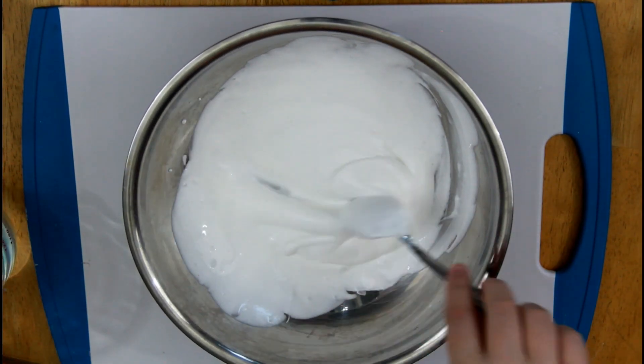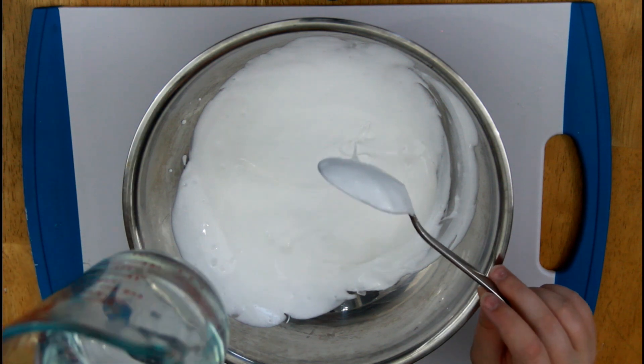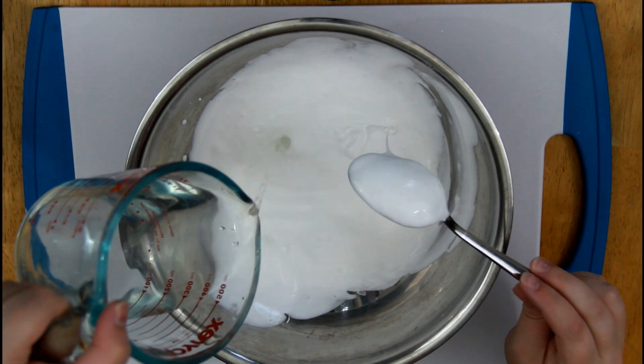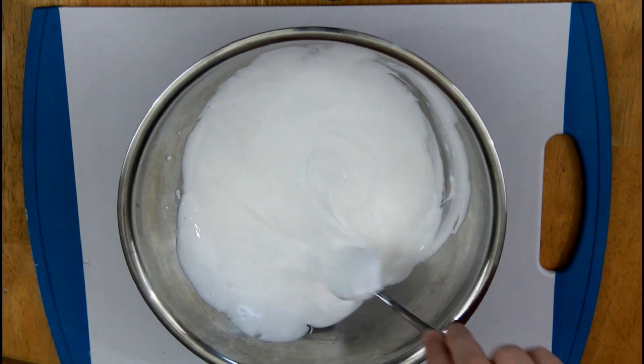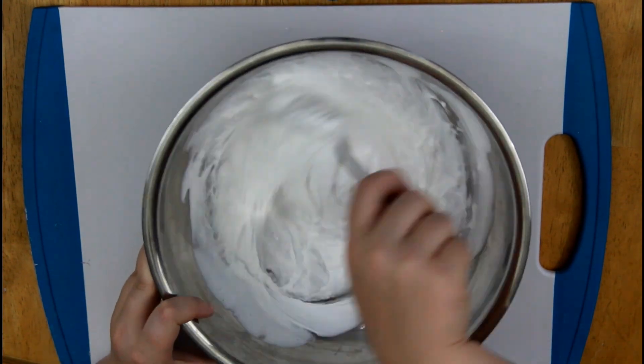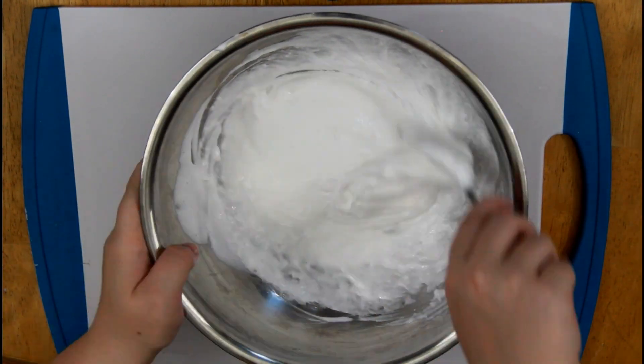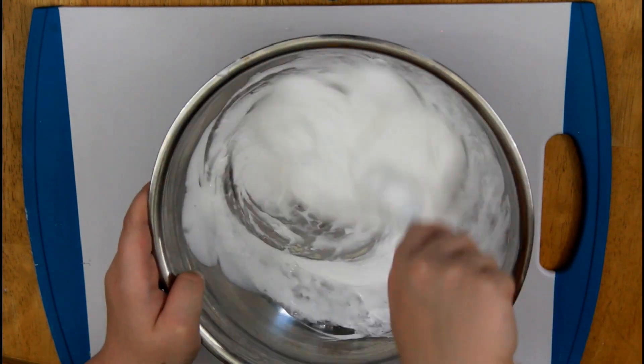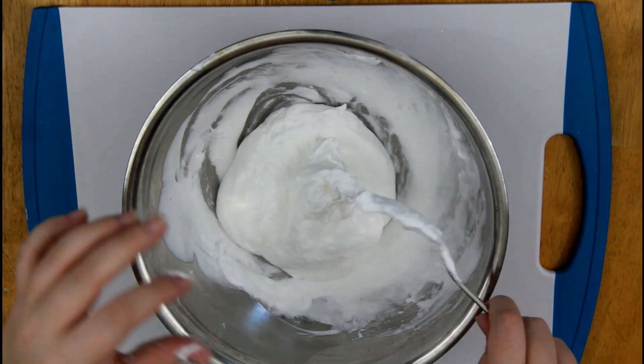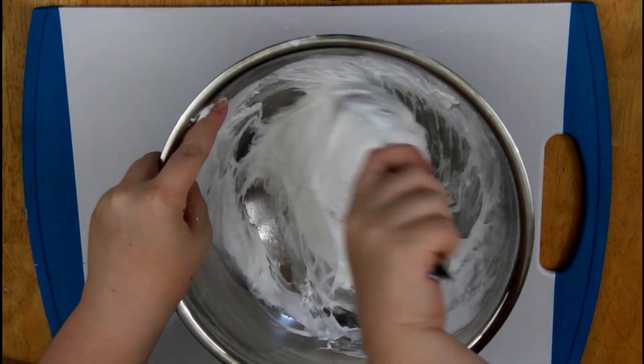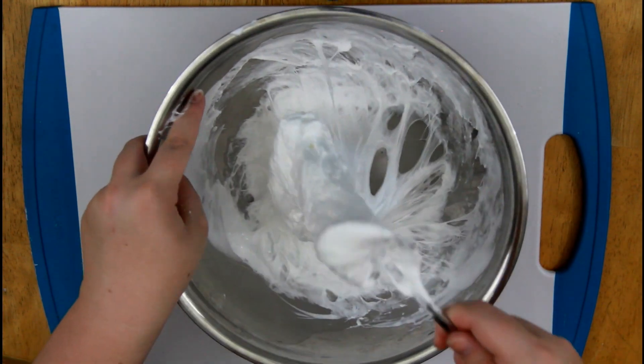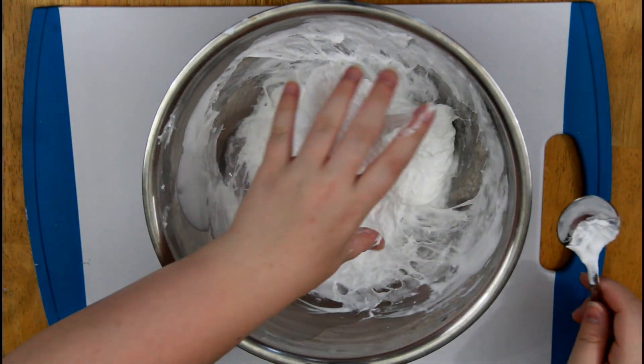Alright, so once you think they're pretty evenly mixed, you're just going to slowly add your borax solution in, just a little at a time, until it gets to about the consistency that you want. Alright, so now that mine is seeming pretty sticky, I'm going to actually go ahead and take it out of the bowl, and just use my hands.